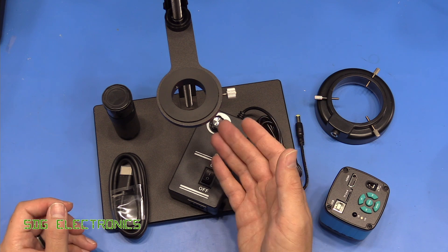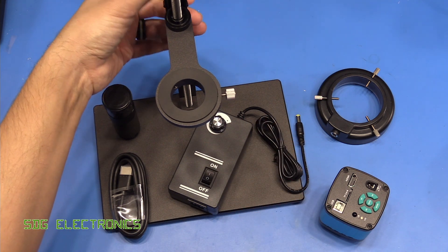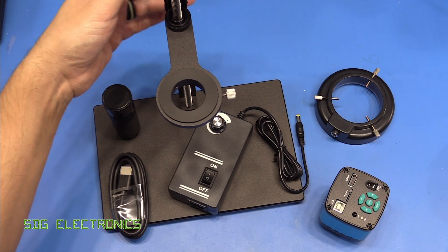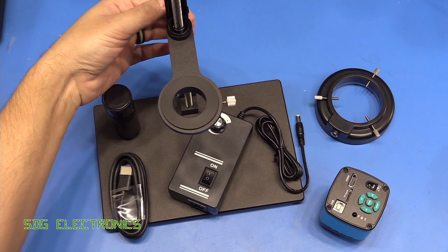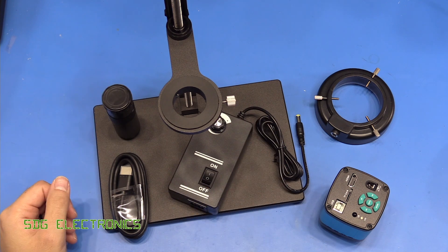And then we have this stand here which allows us to adjust the height of the microscope. So there's a little lead screw on this that goes up and down and then you can clamp it in place to stop it wobbling around.